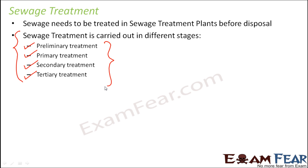These four stages may differ across sewage treatment plants. In some plants, preliminary and primary treatment are fused together and simply called primary treatment. In others, tertiary treatment is not mentioned separately — some plants only list two stages: primary and secondary treatment. But if you break it down properly, there are four stages through which sewage is passed to convert it into clean water.